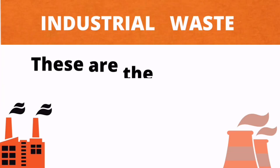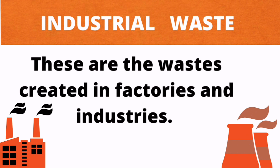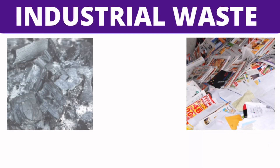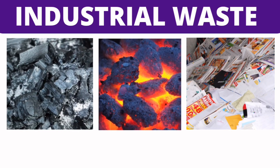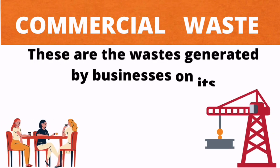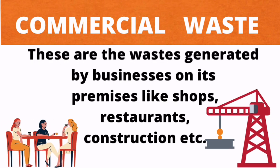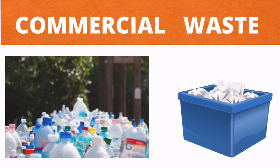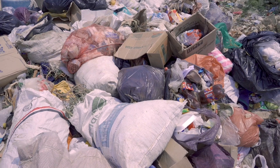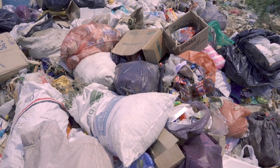Waste produced by undertaking different agricultural activities is called agricultural waste — like husk, expired medicines, pesticides, and fertilizers. The waste generated by different industries like food processing plants, chemical plants, power plants, and textile industries is called industrial waste. Ashes, coal, rubber, plastic, and glass are a few examples of industrial waste. Commercial waste is the waste generated by businesses on their premises like shops, restaurants, schools, and colleges — plastic, paper, and textile are a few examples.